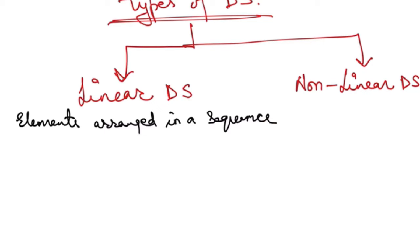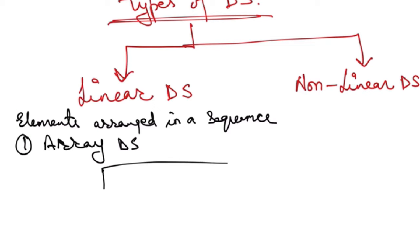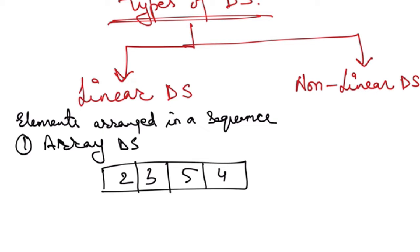The first linear data structure is the array. In an array, elements are arranged in continuous memory locations and all elements are of the same type. For example, an array might look like: values 2, 3, 5, 4 at indices 0, 1, 2, 3.